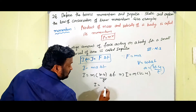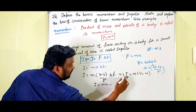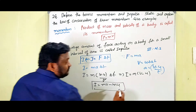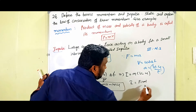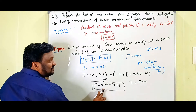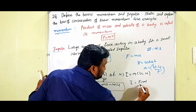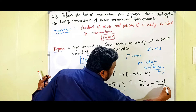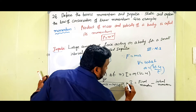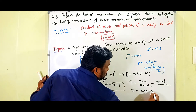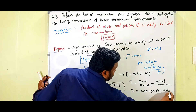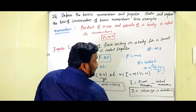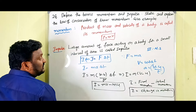Expanding: I = mv − mu. Here mv is the final momentum and mu is the initial momentum. Therefore impulse I equals the change in momentum — final momentum minus initial momentum.